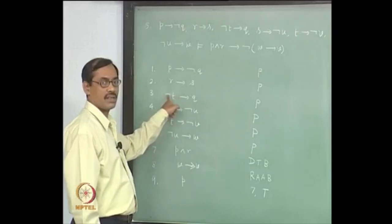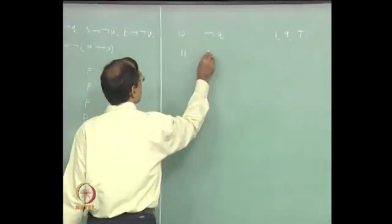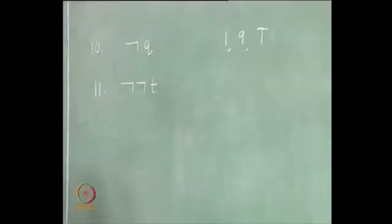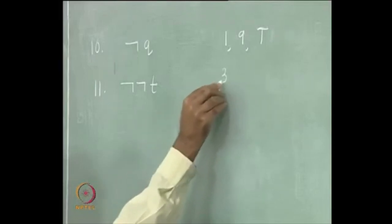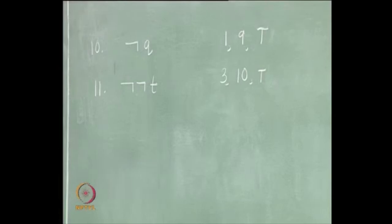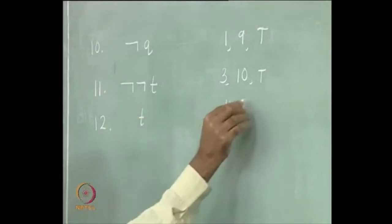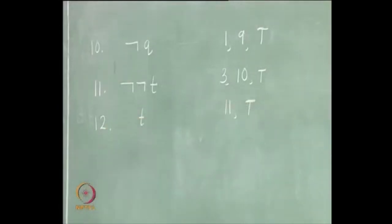That will give not-not-t. So that gives not-not-t by using line 3 and modus ponens. Again, modus ponens - if you do not remember the name, just write T. Now, not-not-t - first let us bring it to t using double negation. Now you have a nice formula. Double negation - if you do not remember, write T.